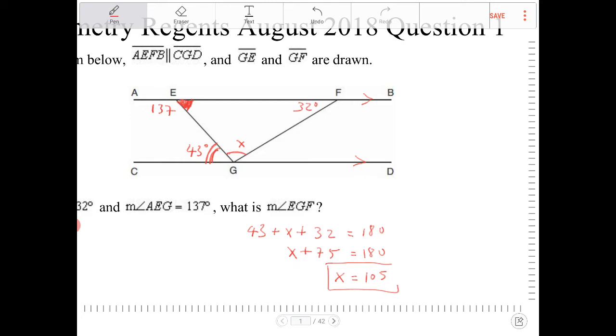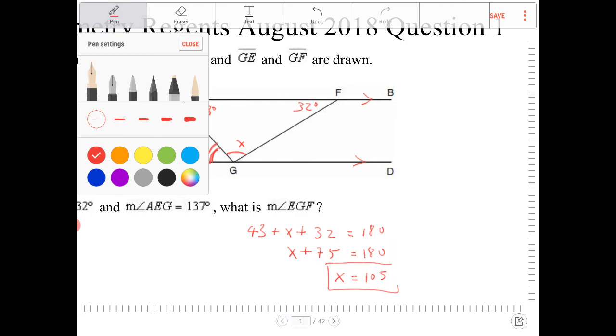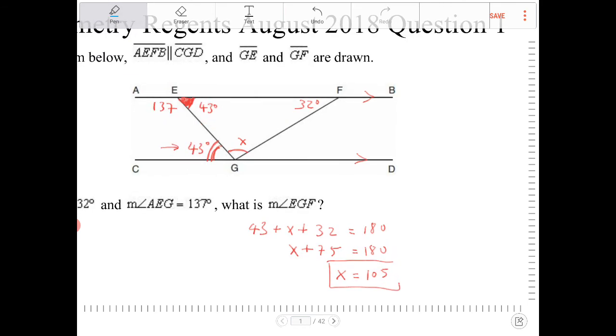So you can see that that angle there is also 43, and it's no coincidence that that is 43 because 43 and this 43, they are alternate interior angles, and we recognize alternate interior angles are supposed to be congruent. And then the last step is recognizing this angle, 43, 32, and angle X must be supplementary.